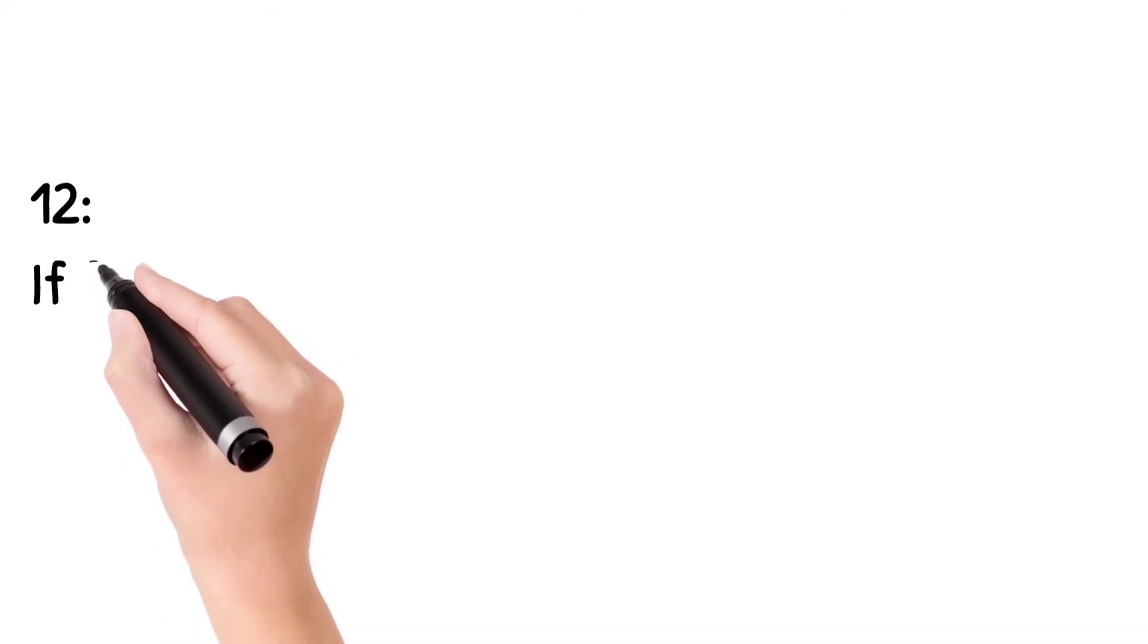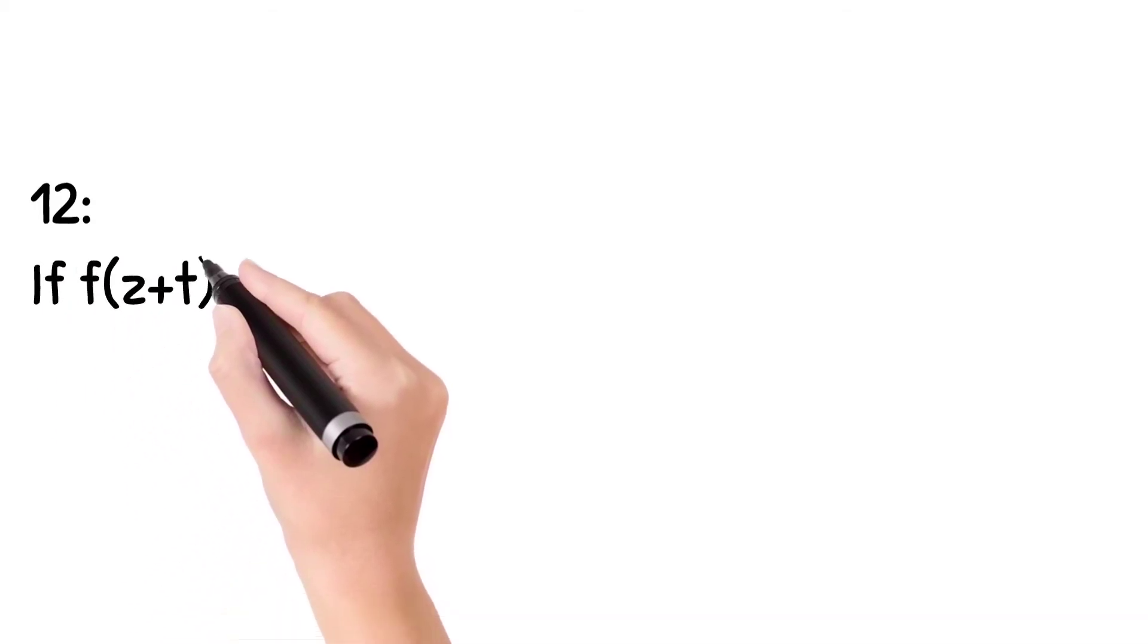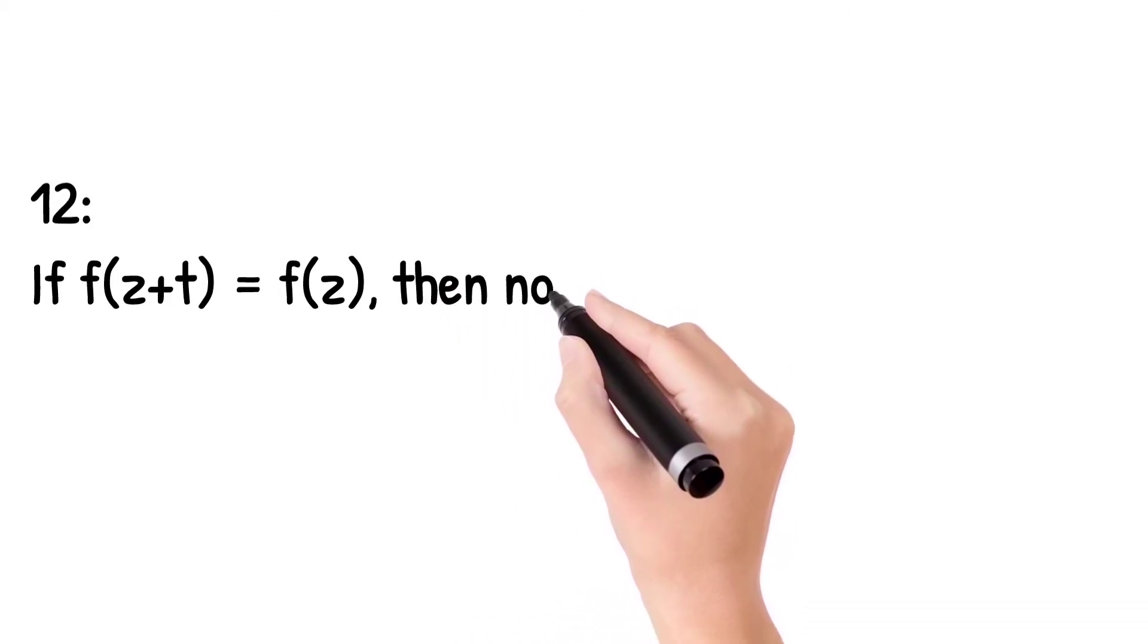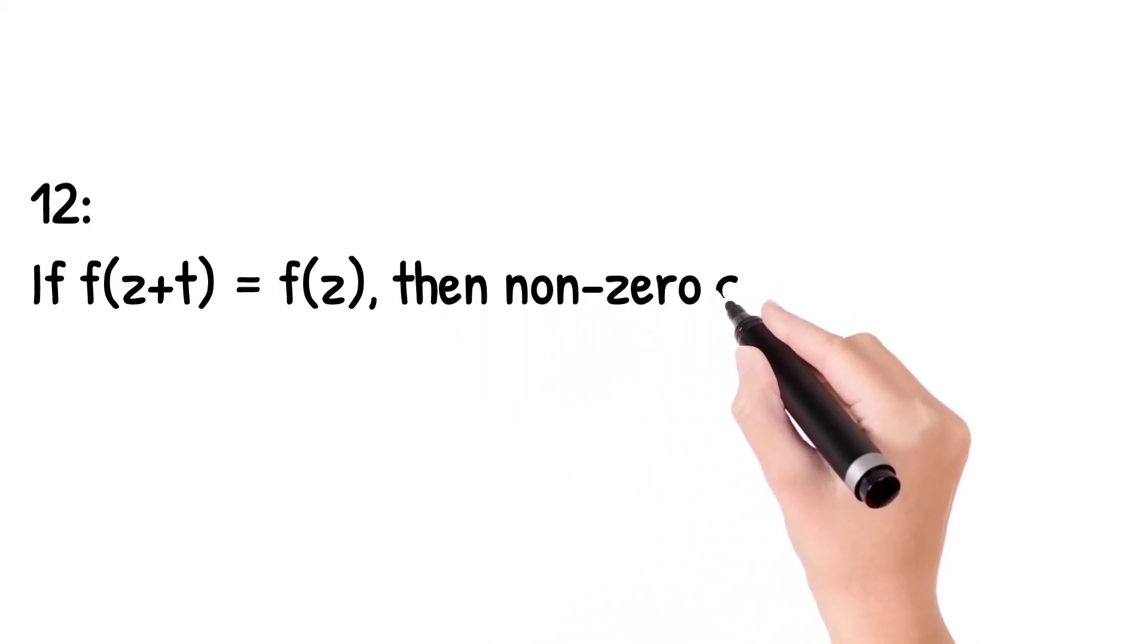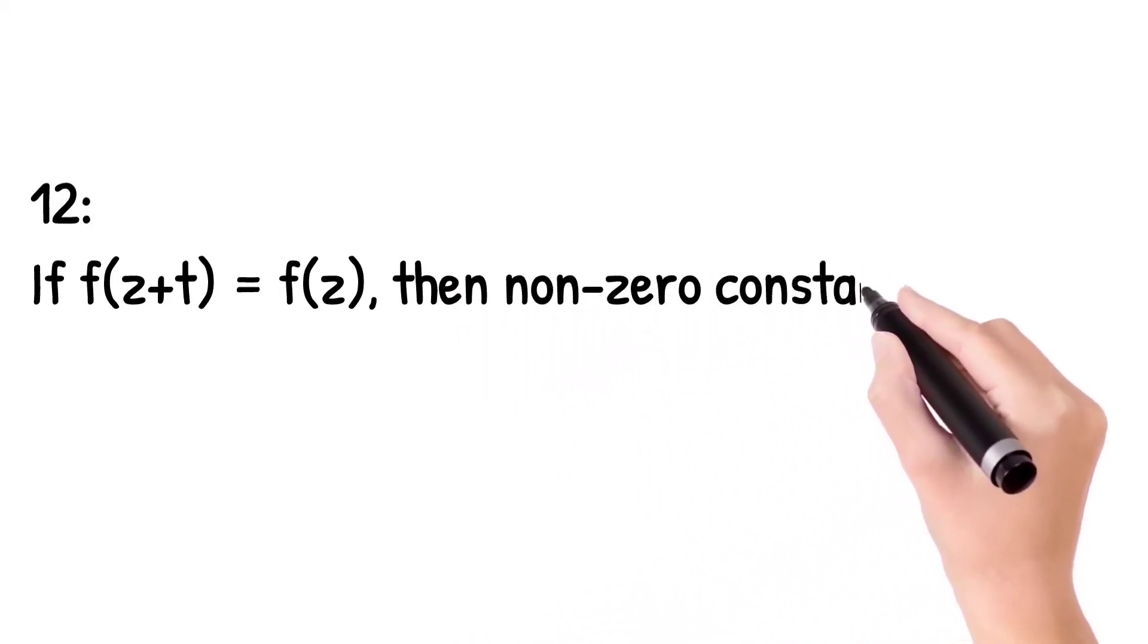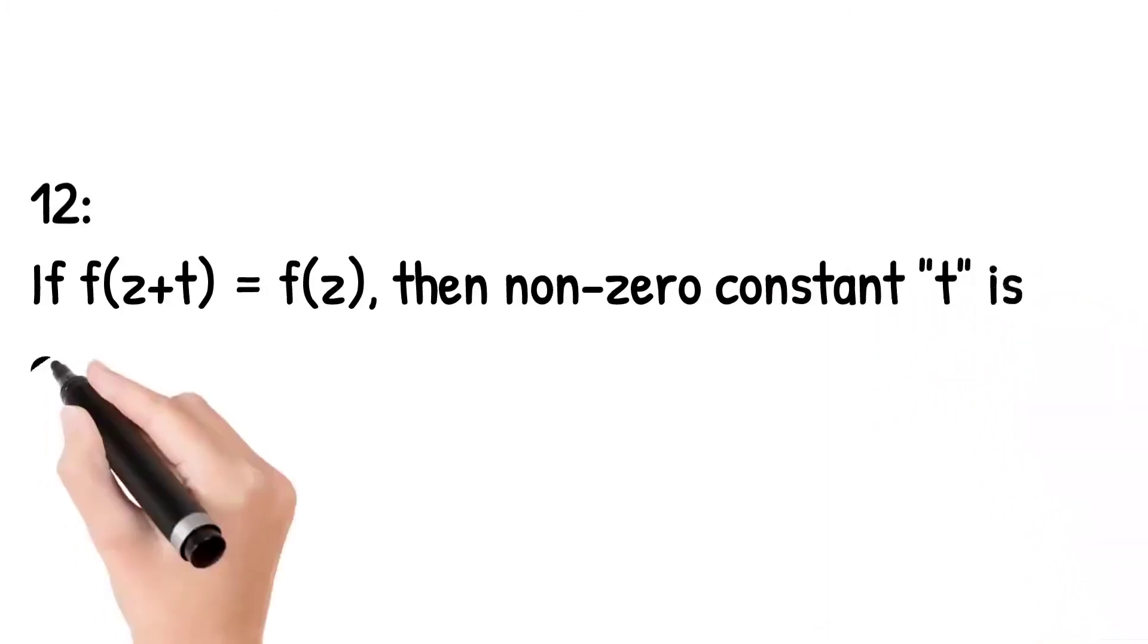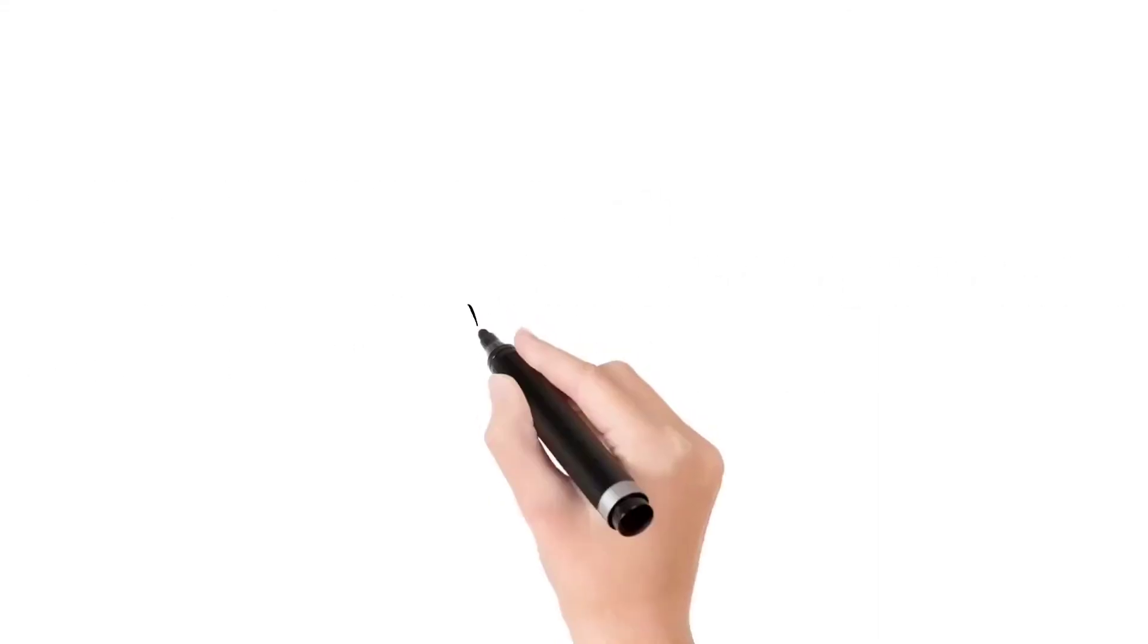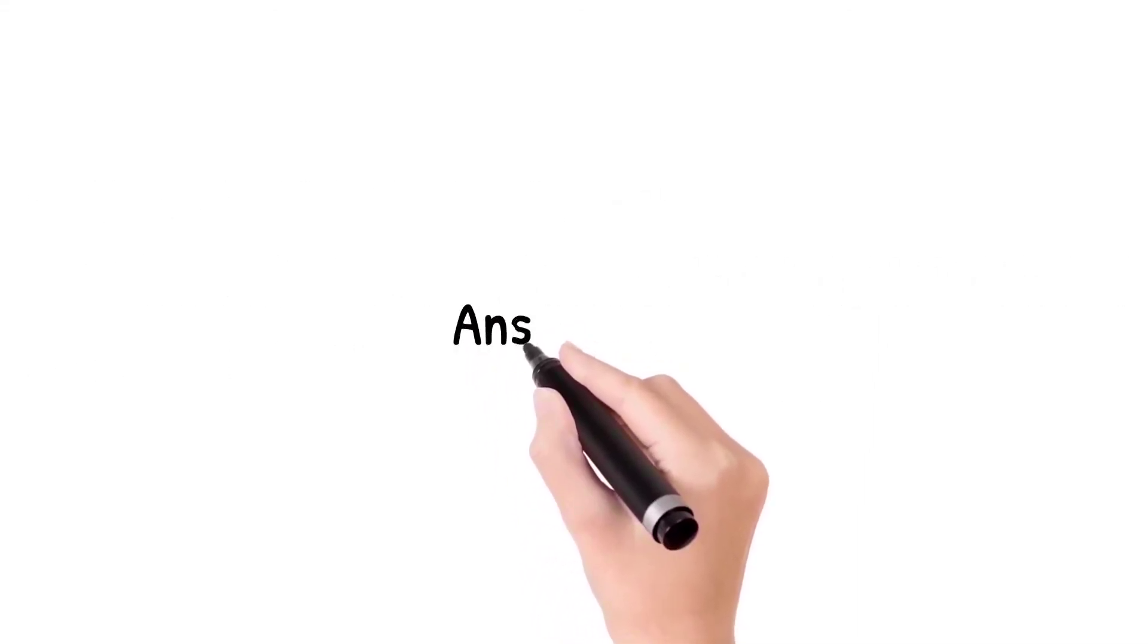Question number 12: If f of z plus t equals f of z, then non-zero constant t is called? Answer is period.